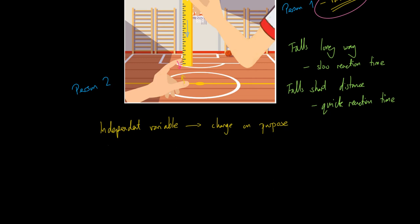Dependent variable, of course, because it depends on the independent variable. And then finally, control variables. Control variables—they are the ones you've got to keep the same every time you do this.